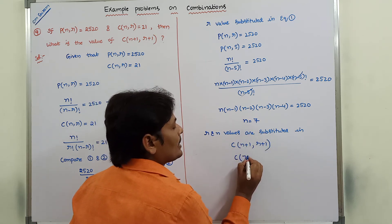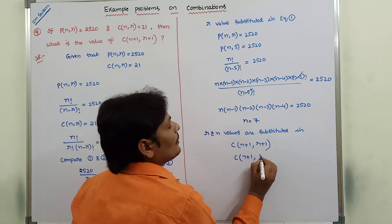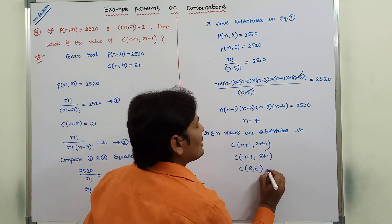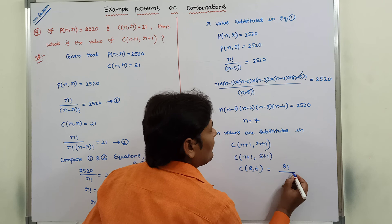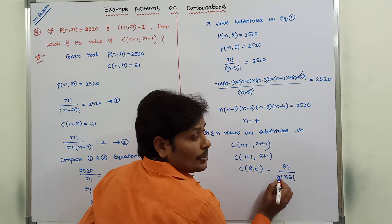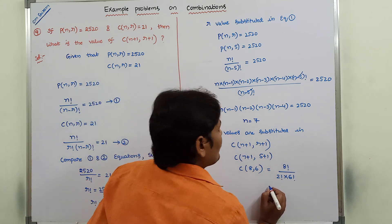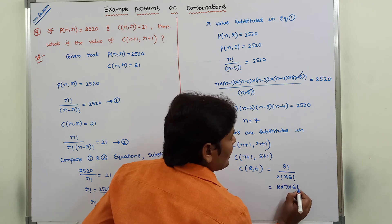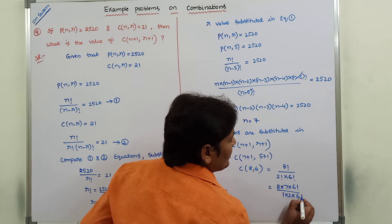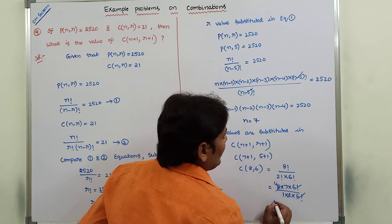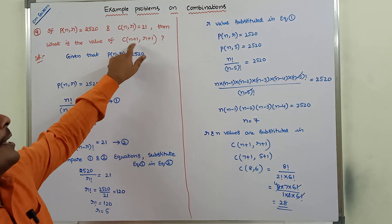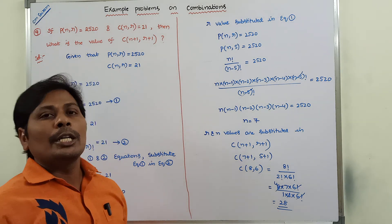Now substituting n equals 7 and r equals 5 into C(n+1, r+1): C(8, 6) equals 8 factorial divided by 6 factorial into 2 factorial, which equals 8 times 7 times 6 factorial divided by 2 times 1 times 6 factorial. The 6 factorials cancel, giving 56 divided by 2, which equals 28. The answer is 28.